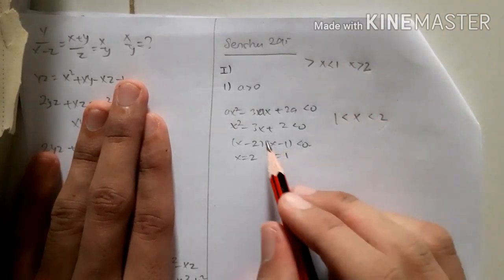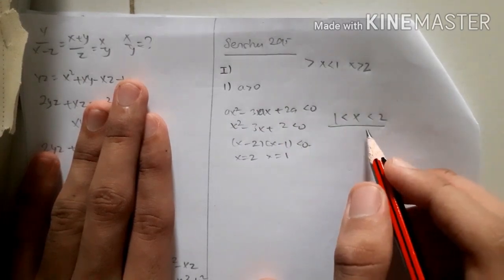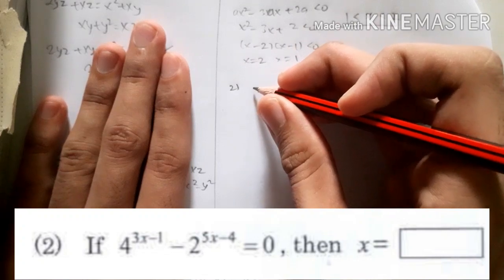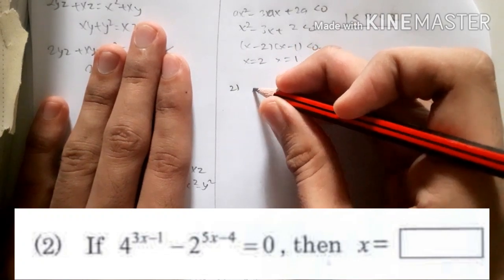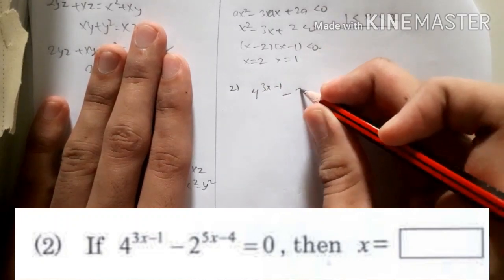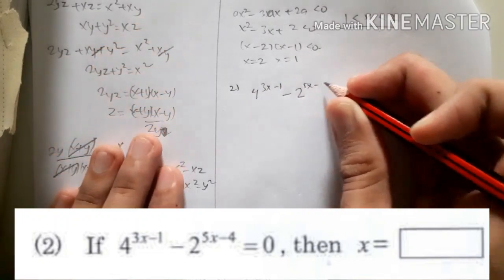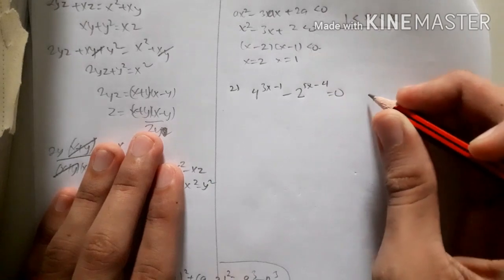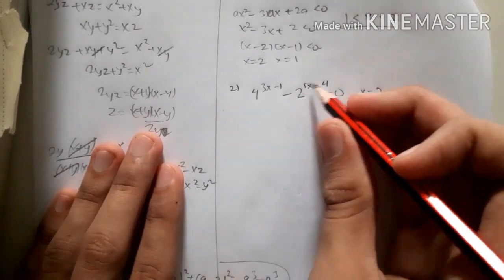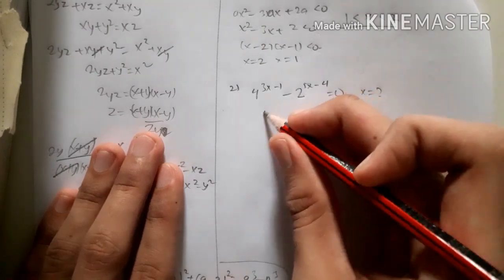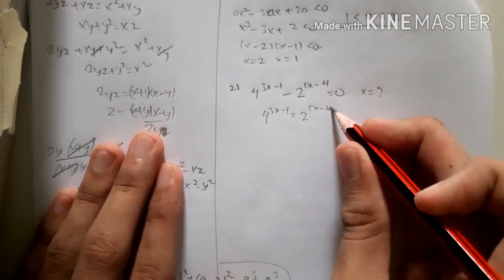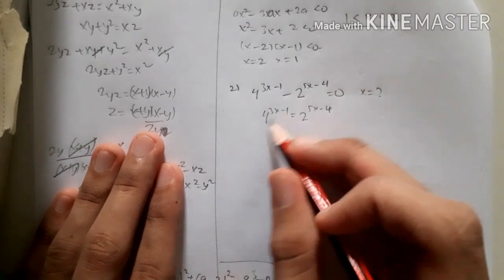For number 1, the answer is that interval. Now number 2 is an exponent question: 4 to the power of 3x minus 1, minus 2 to the power of 5x minus 4, equals 0. We move the 2 to the power of 5x minus 4 to the right, then change 4 into 2 to the power of 2.